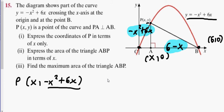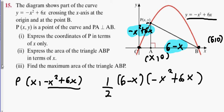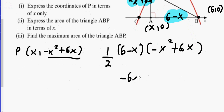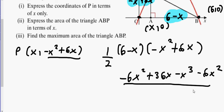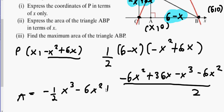Multiplying out the area expression: area equals one half times (6 minus x) times (minus x squared plus 6x). Expanding gives minus 6x squared plus 36x plus x cubed minus 6x squared, all divided by 2. So area equals minus one half x cubed plus 3x squared plus 18x... wait, let me redo: area is minus half x cubed minus 6x squared plus 18x.